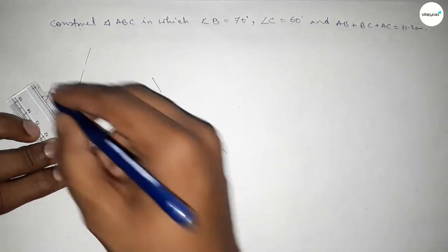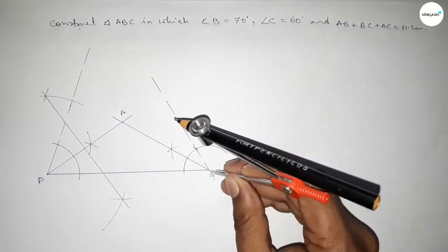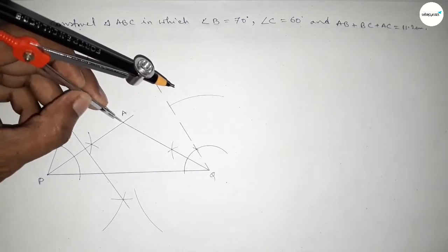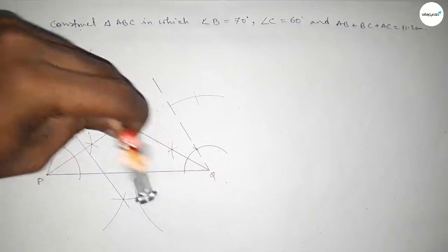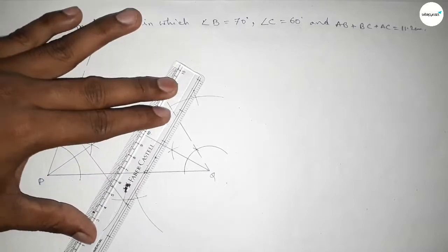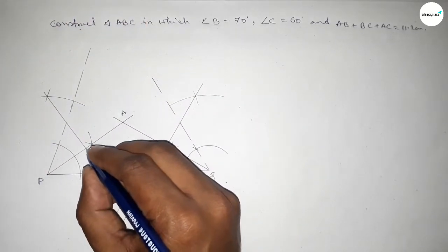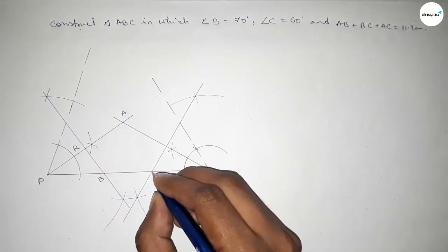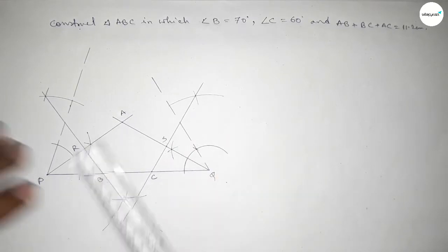Joining this bisector of the line PA. Now again we have to bisect the line AQ. Taking greater than half of AQ and drawing an arc by this way. With the same length, putting the compass here and cutting here and cutting here, so both the curves intersect at two points. Now joining this bisector. The bisectors intersect at a point — taking here point R, here B, here C, and here point S.